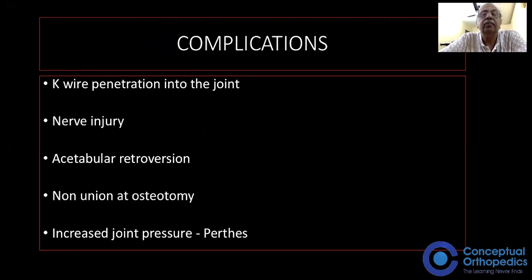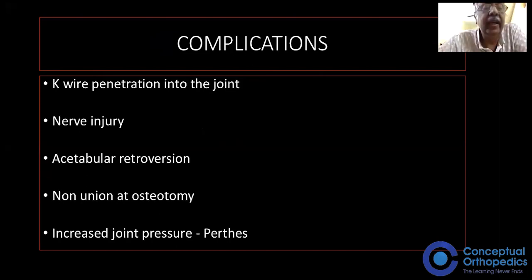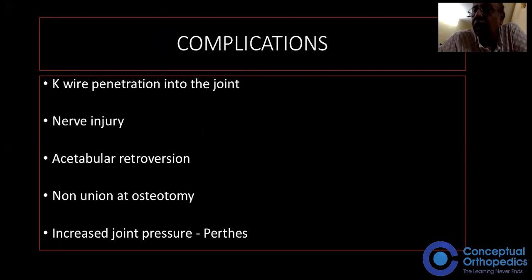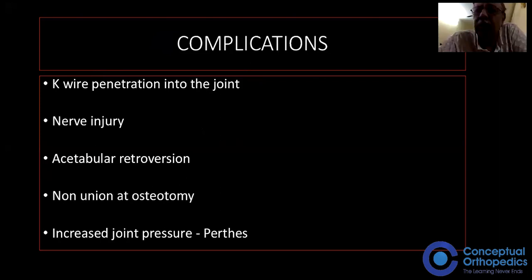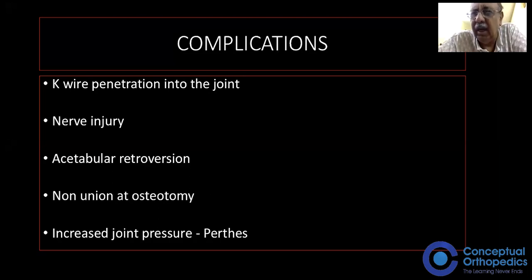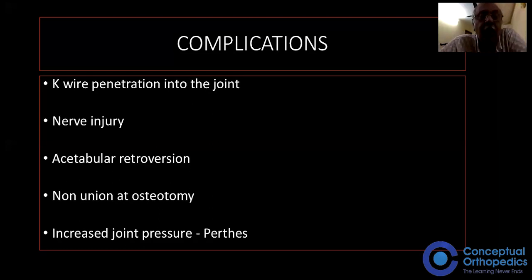The most common complication is K-wire penetration into the acetabulum, which should be avoided. Nerve injuries can occur but are very rare. Acetabular retroversion is the most talked-about complication, because following Salter osteotomy it can produce acetabular retroversion, which is considered a cause of early osteoarthritis of the hip. Several authors support this acetabular retroversion theory, while many are against it, but there is no convincing proof in the literature that it leads to early osteoarthritis.